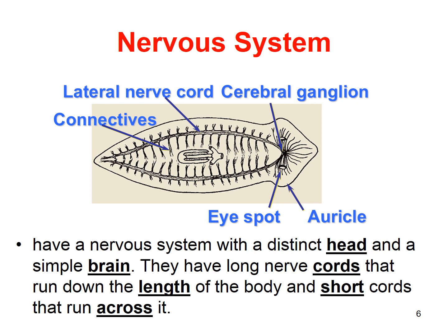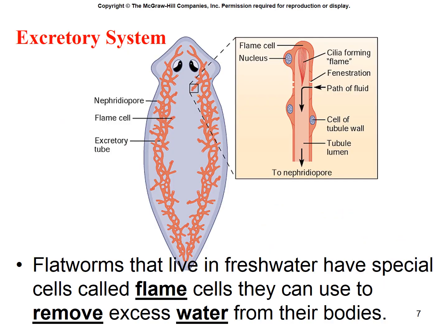They do have a very rudimentary nervous system — a little more complex than jellyfish. They have lateral nerve cords and cerebral ganglia, which serve as a kind of information center in their head area. They don't have true eyes, but they do have eye spots that are sensitive to light — considered photosensitive. They also have auricles that help them sense their surroundings. They have a nervous system with a distinct head, a simple brain, long nerve cords running down the length of their body, and short nerve cords running across.